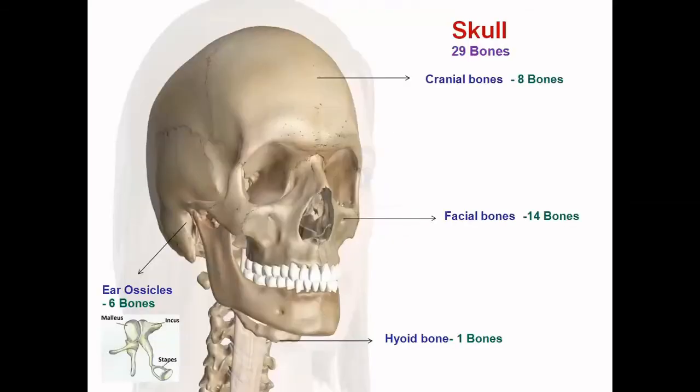Now let's learn the axial skeleton in detail. The skull is the skeleton of the head and consists of 29 bones. These include the cranial bones, facial bones, ear ossicles, and hyoid bone.